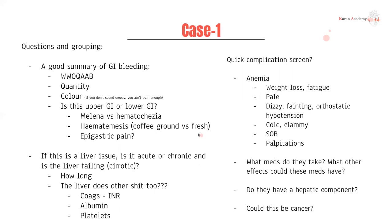Ask yourself: could this have a hepatic component? With upper GI bleeds, one of the worst things you could have is a variceal bleed. Always ask if they are a big drinker, have had hepatitis, or simply ask them directly: do you have liver disease, or have you ever been told you have liver disease? And then consider: could this be a cancer?